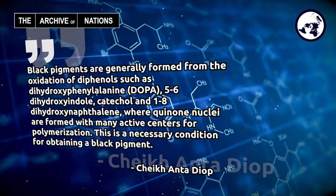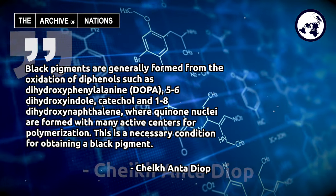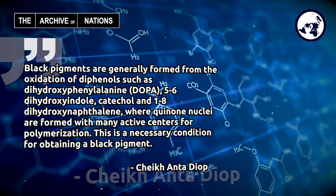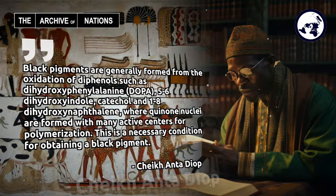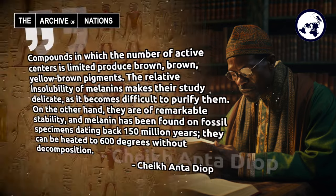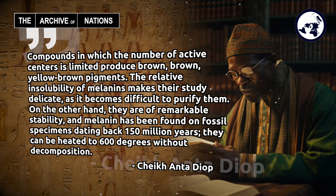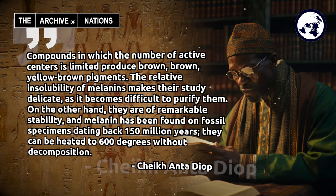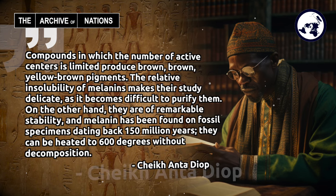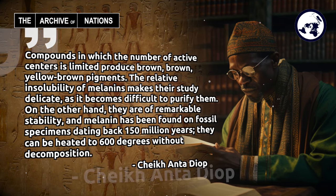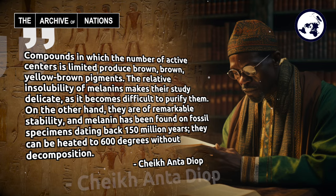Black pigments are generally formed from the oxidation of diphenols such as dihydroxyphenylalanine (DOPA), 5,6-dihydroxyindole, catechol, and 1,8-dihydroxynaphthalene, where quinone nuclei are formed with many active centers for polymerization — a necessary condition for obtaining a black pigment. Compounds in which the number of active centers is limited produce brown or brown-yellow pigments. The relative insolubility of melanins makes their study delicate, but they are of remarkable stability: melanin has been found on fossil specimens dating back 150 million years, and they can be heated to 600 degrees without decomposition.